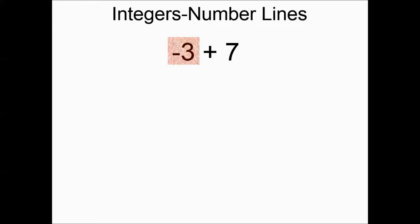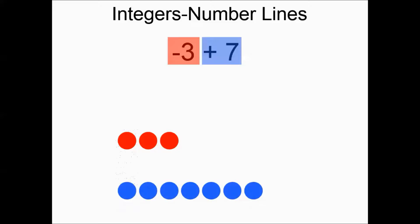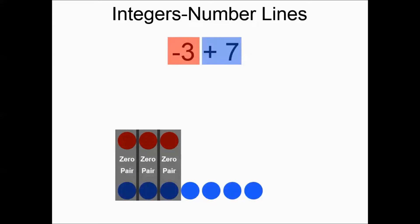Negative three plus seven: that's three negative chips and seven positive chips. You're going to have three zero pairs and some positives left over, so your answer is four positives. As soon as you see different teams — I think of the positives and negatives as teams — you're going to subtract their values, and the one with the larger absolute value wins. So that works out to four.